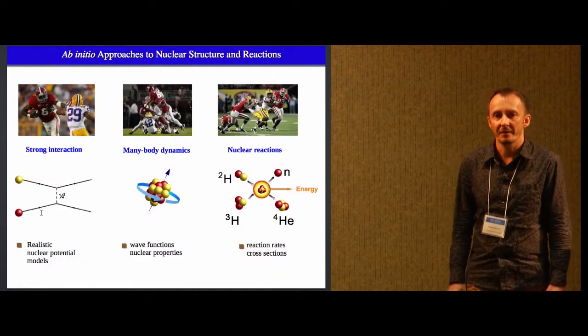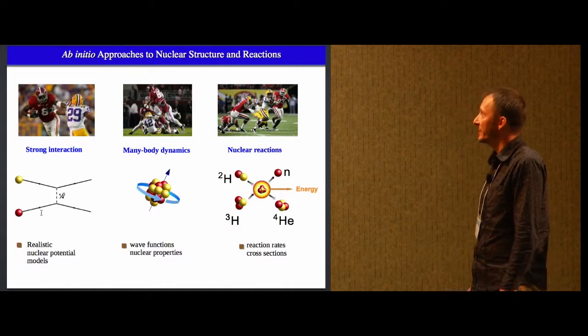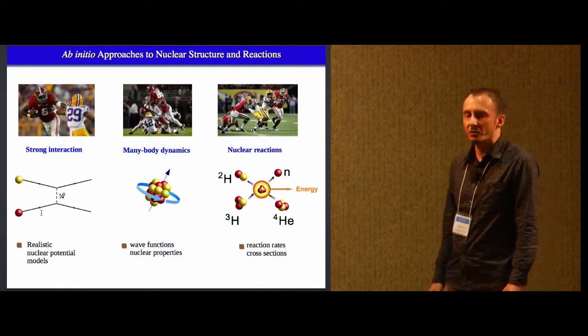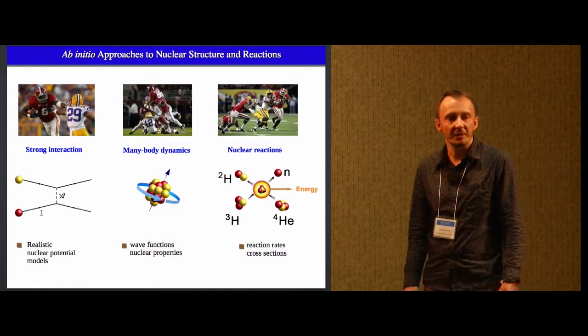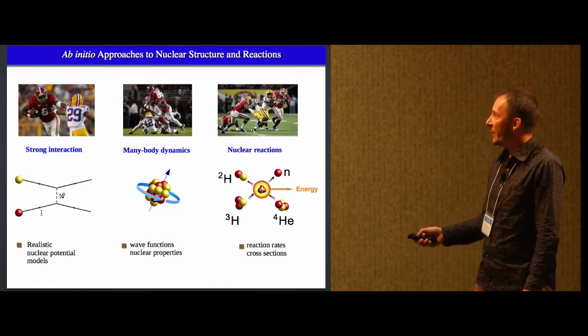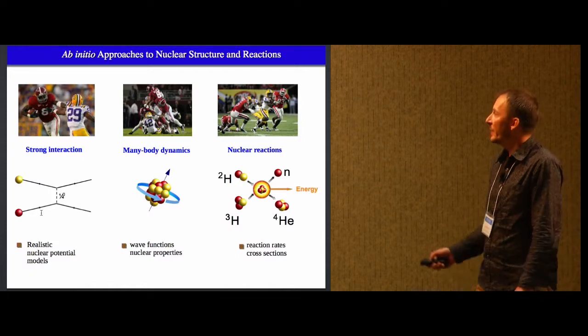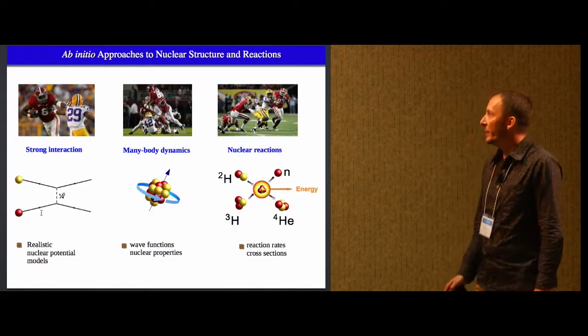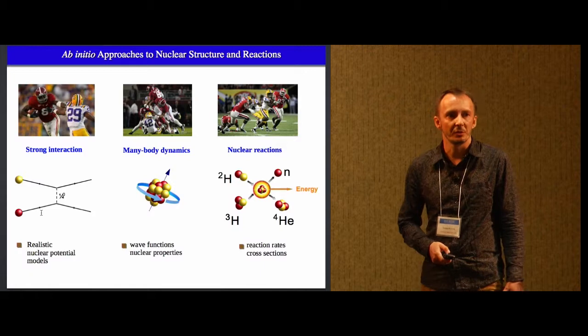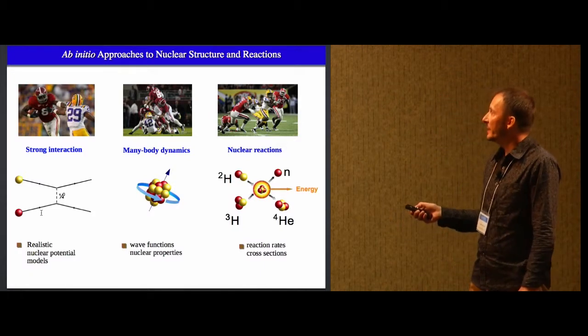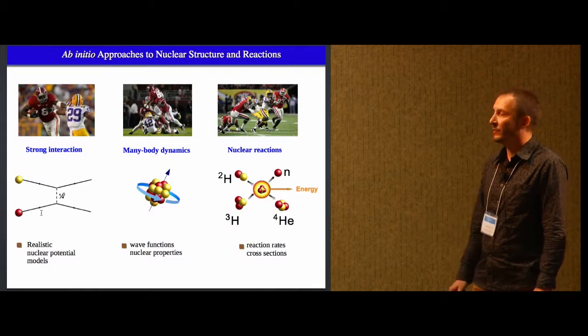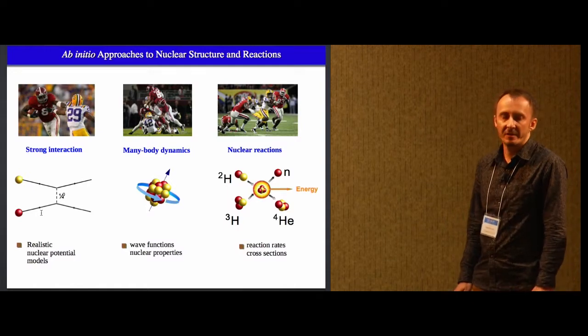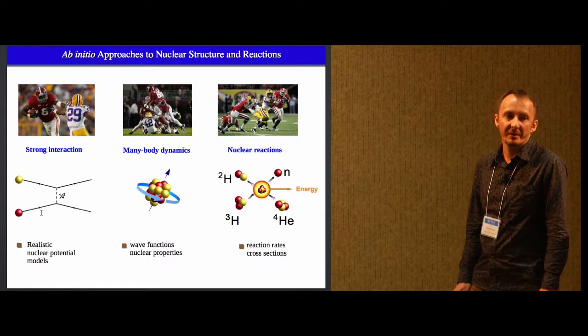The slide just shows the philosophy of ab-initio approaches to nuclear physics. Ab-initio means from first principles. So one starts with a strong interaction between protons and neutrons. There exists a bunch of families of interactions which are called microscopic or realistic. So once you have your strong interaction or model of strong interaction, then you take your favorite tool in which you solve Schrodinger equation to get wave functions. And from wave functions you compute nuclear properties. But we don't end there. We can also use the information that we computed from many body dynamics and calculate reaction processes. So we can calculate reaction rates, cross-sections, even for most exotic species, which are not experimentally accessible.